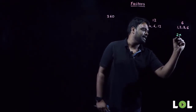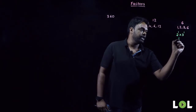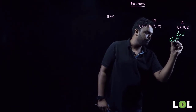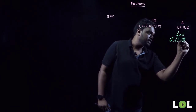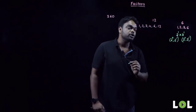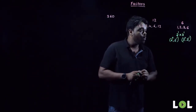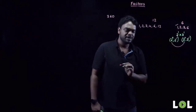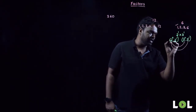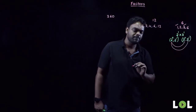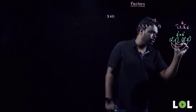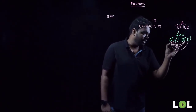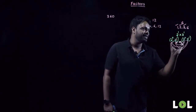For number 6: factorizing gives 2 to the power 1 into 3 to the power 1. In 2 to the power 1, we have 2 to the power 0 and 2 to the power 1. In 3 to the power 1, we have 3 to the power 0 and 3 to the power 1. Multiplying 2⁰ × 3⁰ = 1, 2⁰ × 3¹ = 3, 2¹ × 3⁰ = 2, and 2¹ × 3¹ = 6 — these are the four factors.